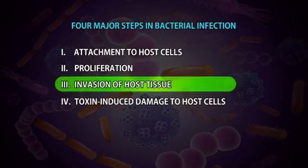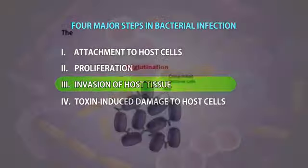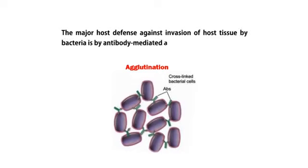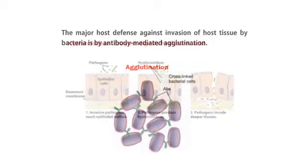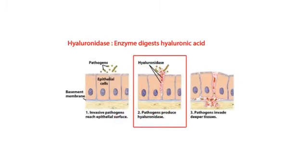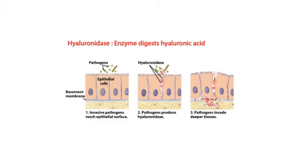Invasion of host tissue. The major host defense against invasion of host tissue by bacteria is antibody-mediated agglutination. However, some bacteria secrete hyaluronidase, which digests the hyaluronic acid present as a main component of the extracellular matrix in the tissues, and thus enhances bacterial invasiveness.